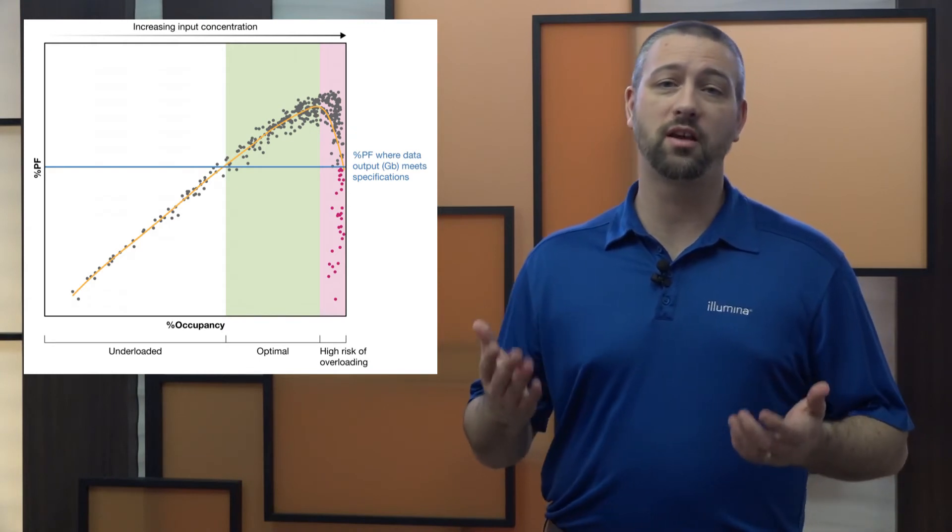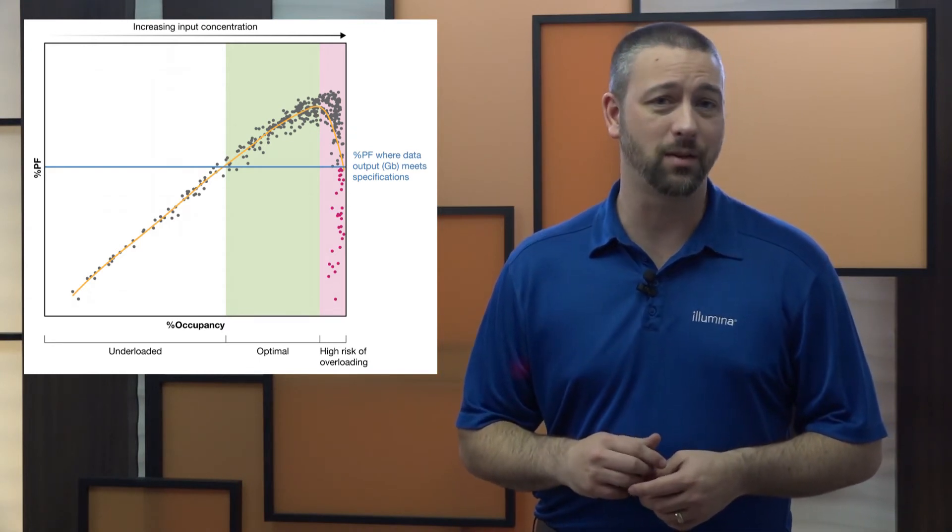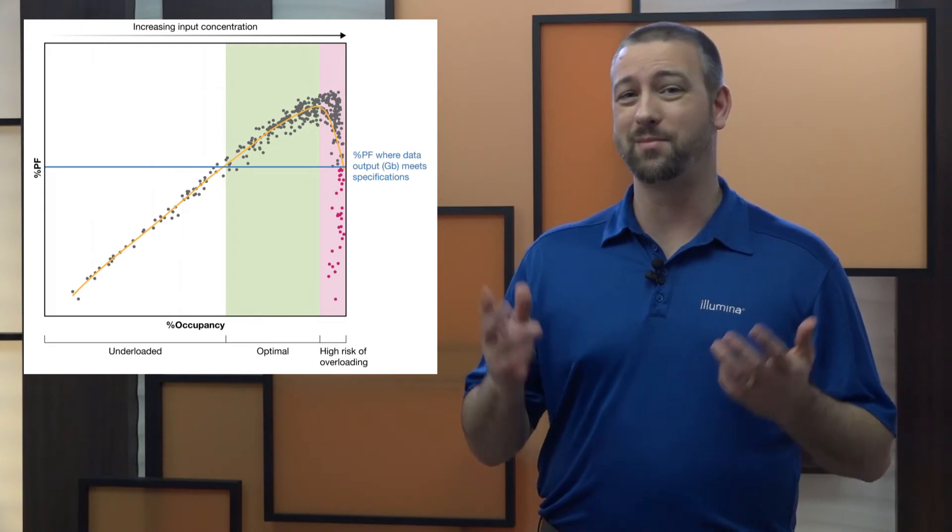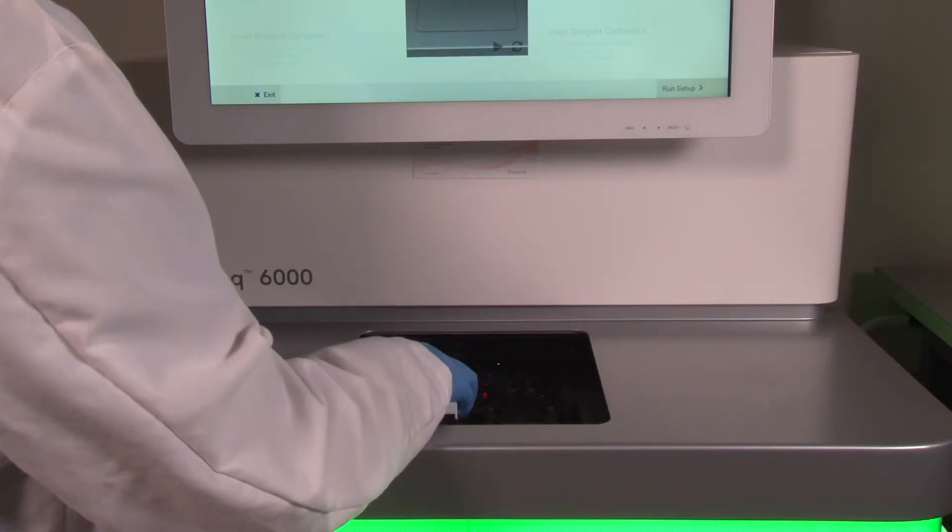Overall, percent clusters passing filter tend to increase directly with the percent of wells occupied until occupancy hits a breaking point. After this breaking point, percent PF and the resulting output drops dramatically.